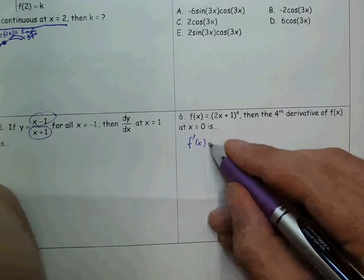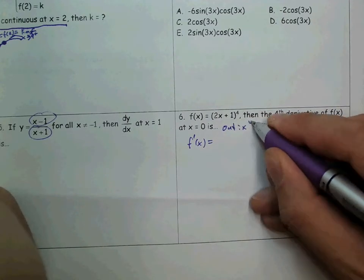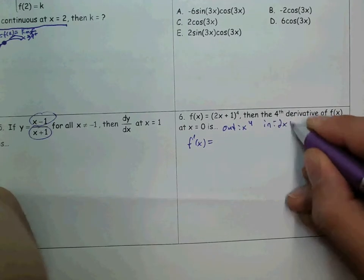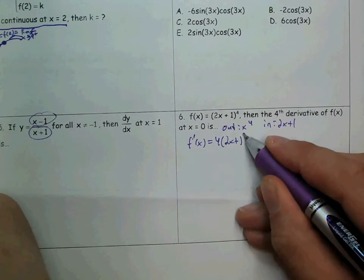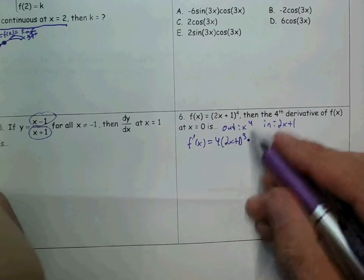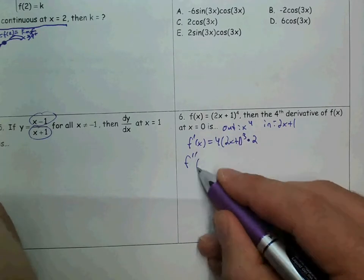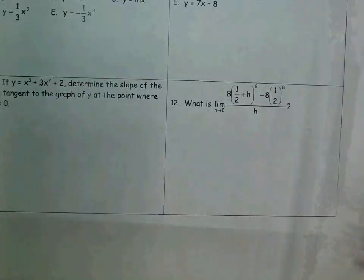Here it asks for the fourth derivative, so you're going to find the first derivative. You should notice there's a function inside of another function, so you'll need to do the chain rule. The outside function is x to the fourth and the function inside is 2x plus 1. You'll do the derivative of the outside with the inside still in it: 4 times (2x plus 1) cubed, times the derivative of the inside, which is 2. Simplify, then find the second derivative — now there's a constant multiple with a chain rule. Continue to find the third and fourth derivatives.